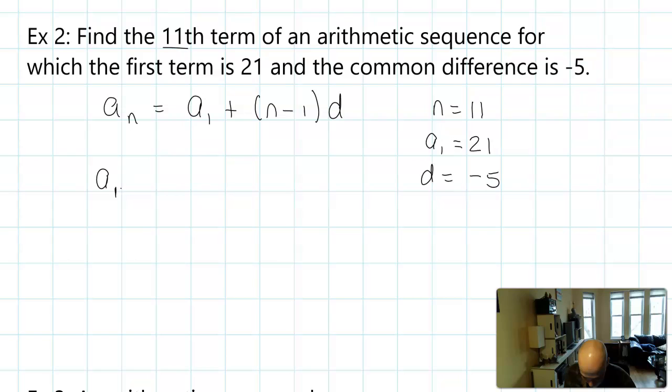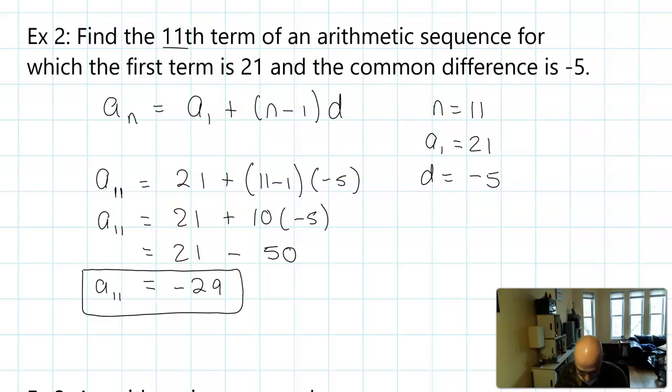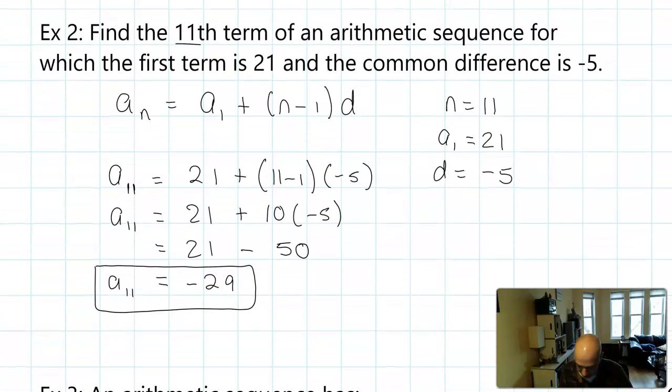I'll plug n in there. So the 11th term would be 21 + (11 - 1)(-5). Once you've set all that up, you really just have to simplify it. The 11th term should be -29. You could, of course, list out 11 terms of the sequence to find it. That's a lot of work, not really a good use of time. Use the formula that you know. If you have your formula and you list your givens, you'll always be able to find the missing piece.